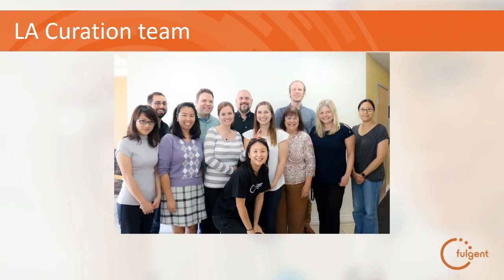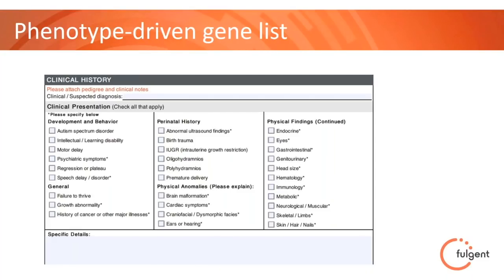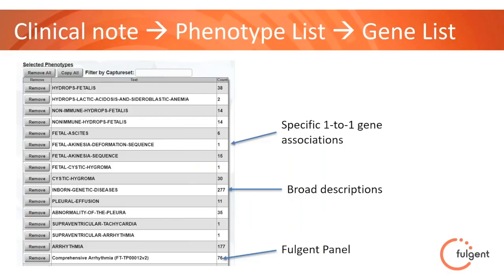Our whole exome sequencing analysis, which is part of CSA, is really a phenotype-driven process. We can deliver the best results when we get the most detailed clinical notes, so here's a pitch: give us as much information as you can. We do provide checkboxes for a high-level view, but we really prefer to get as much as you can send. A clinical summary is great, but even just the notes you have are so valuable. The next step is we take that clinical note, turn it into a list of phenotypic keywords, and use those keywords to search for genes.